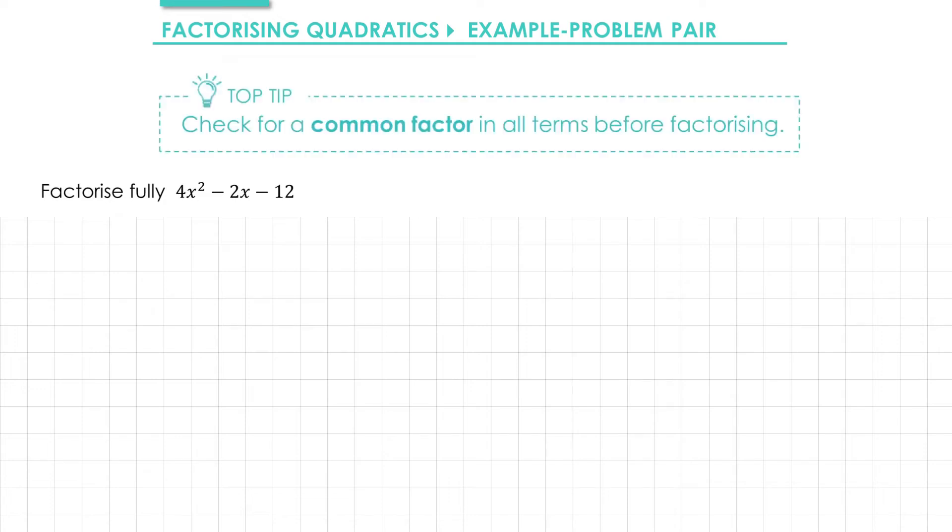Before you apply the cancelling method, it's important that you check for a common factor in all of the terms. In our example we're going to factorise 4x² - 2x - 12. Notice that there's a common factor of 2, so before we apply the cancelling method we're going to pull that factor of 2 out.